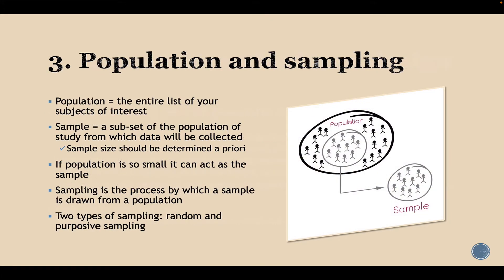The third section is about population and sampling. The population is the entire list of your subjects of interest. In most cases it is impossible to reach the entire population, especially if the population is large, so you are expected to get a sample from that population. A sample is a subset of the population from which data will be collected, and the sample size should be determined a priori, especially for quantitative research. If the population is small, it can also act as your sample.